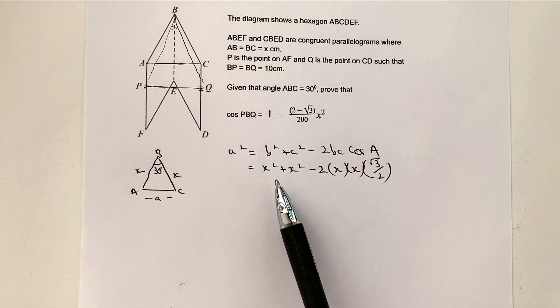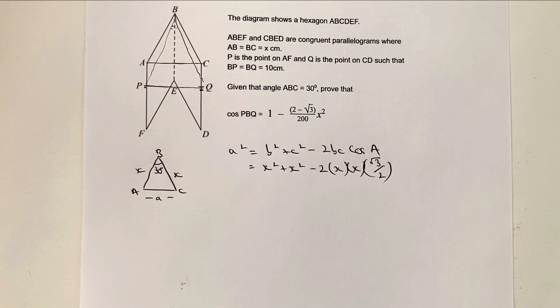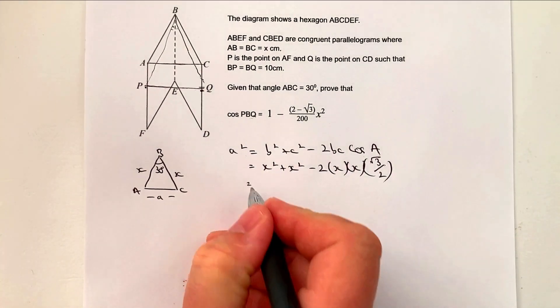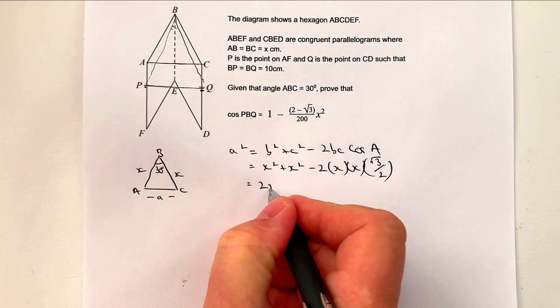I'll try to remember to put a link in this video so you can have a look for yourself. Okay, so now what I'm going to do is I'm just going to tidy this up a little bit, just make it look a little bit easier to deal with. So the first thing is x squared plus x squared is two x squared.